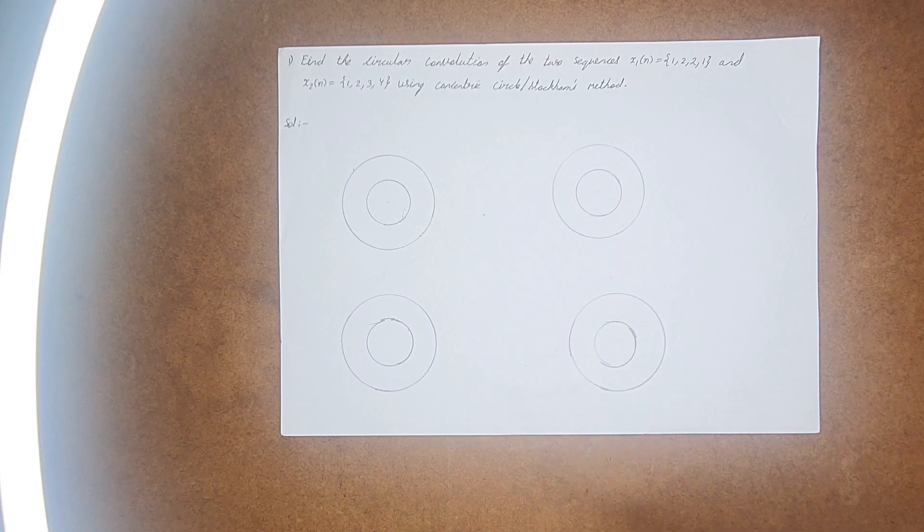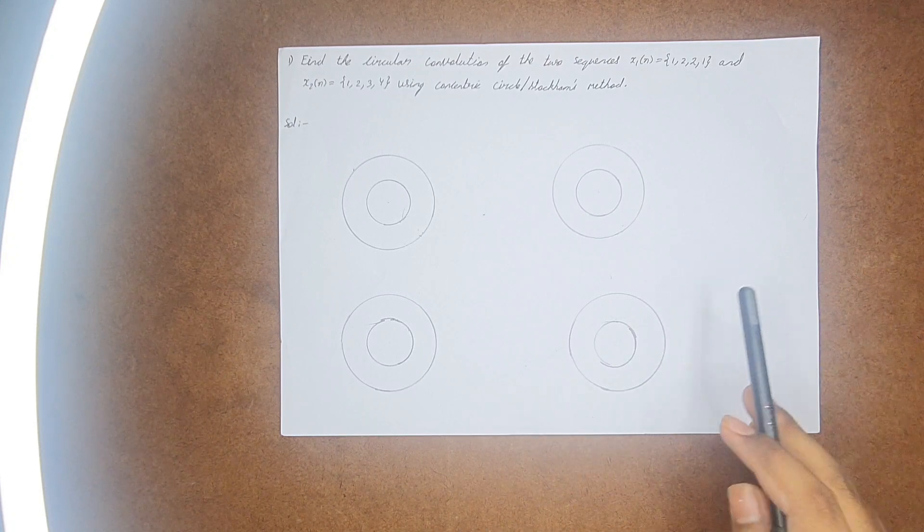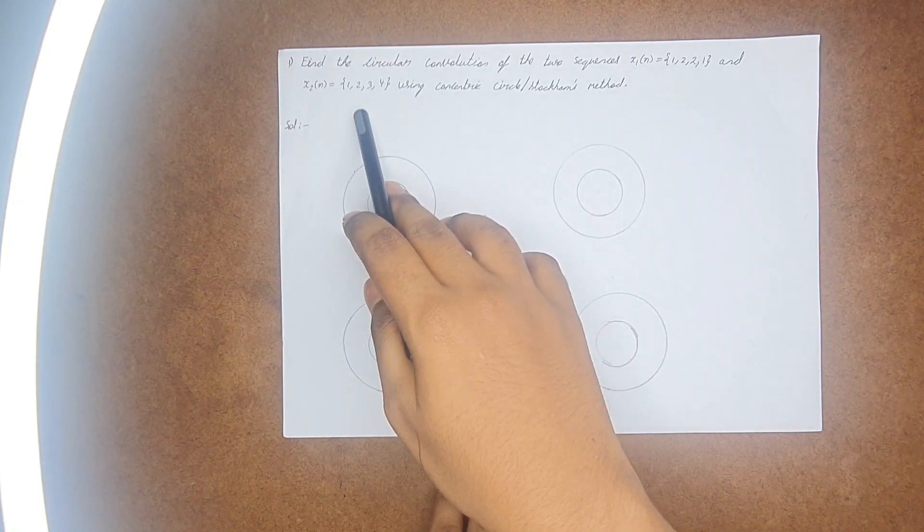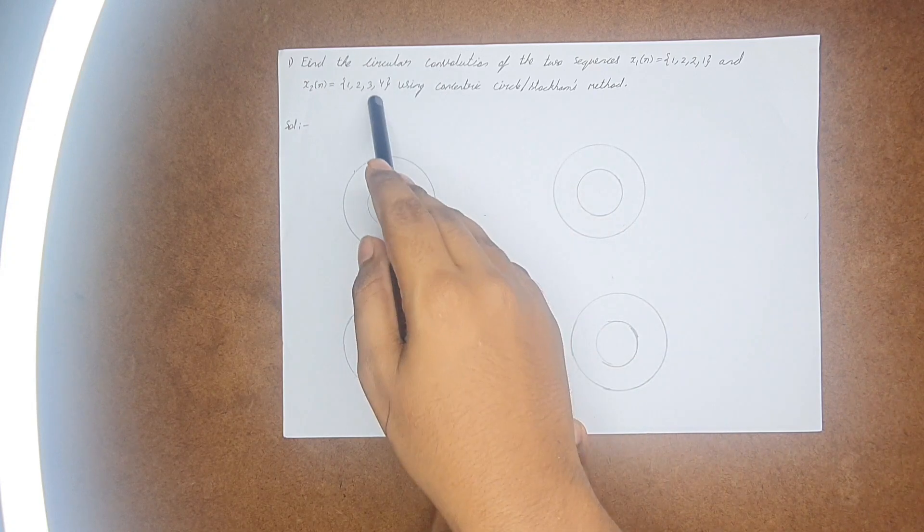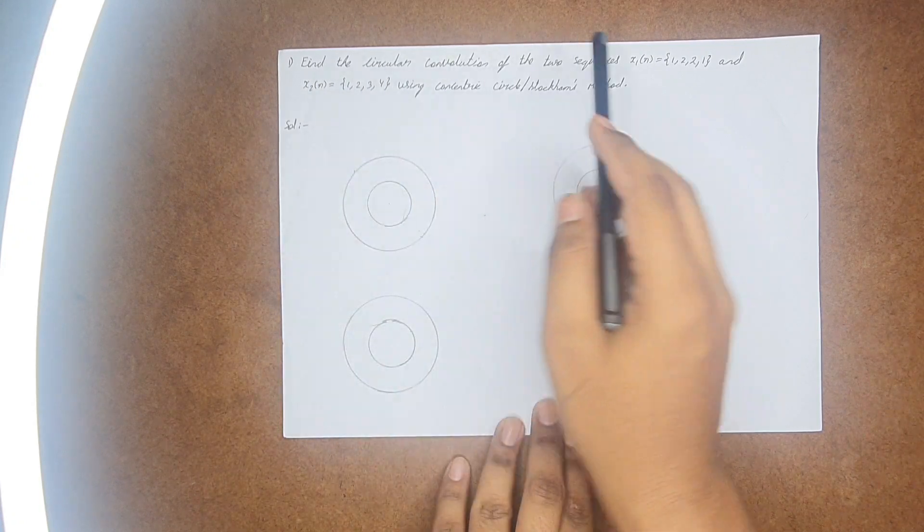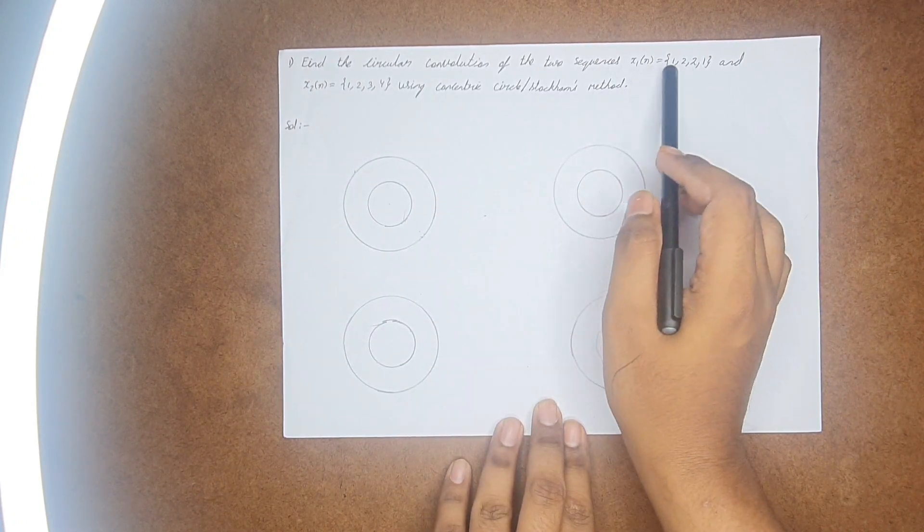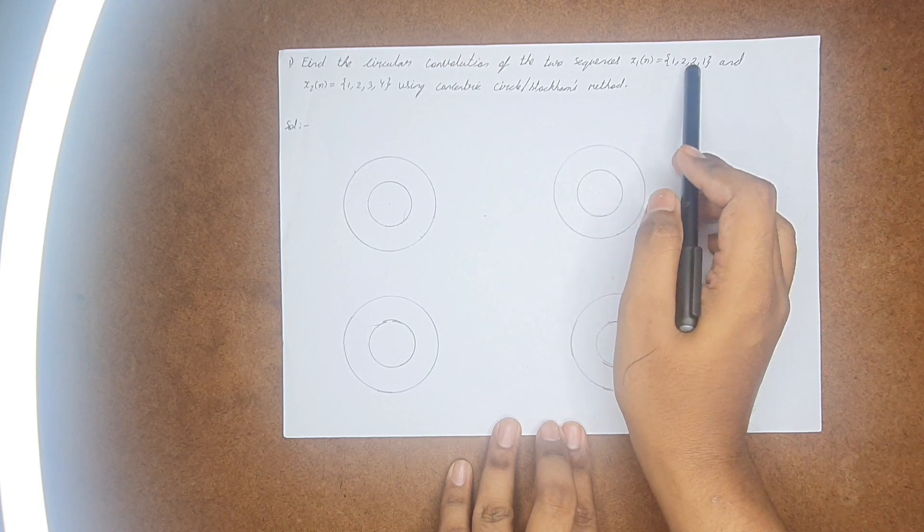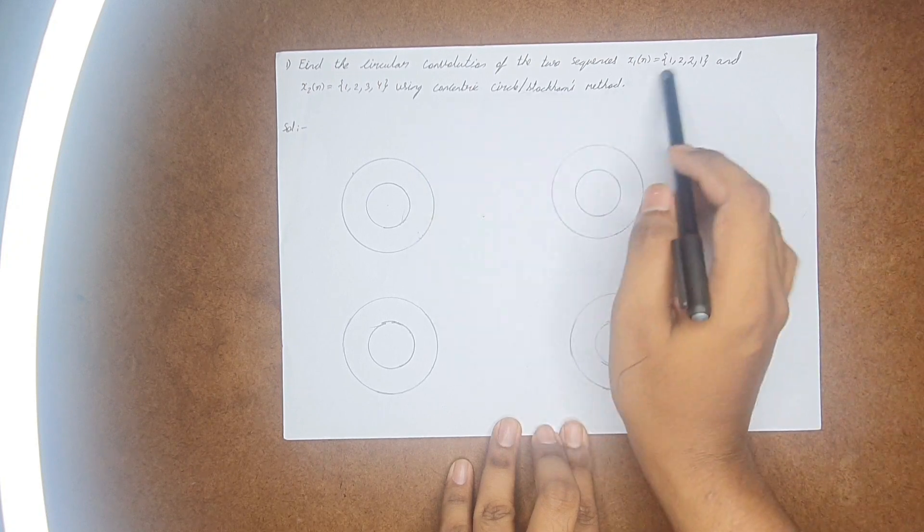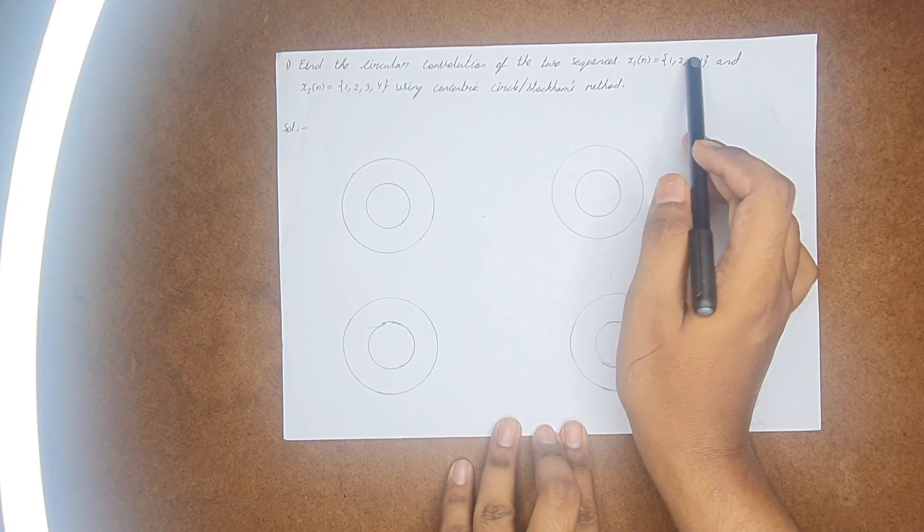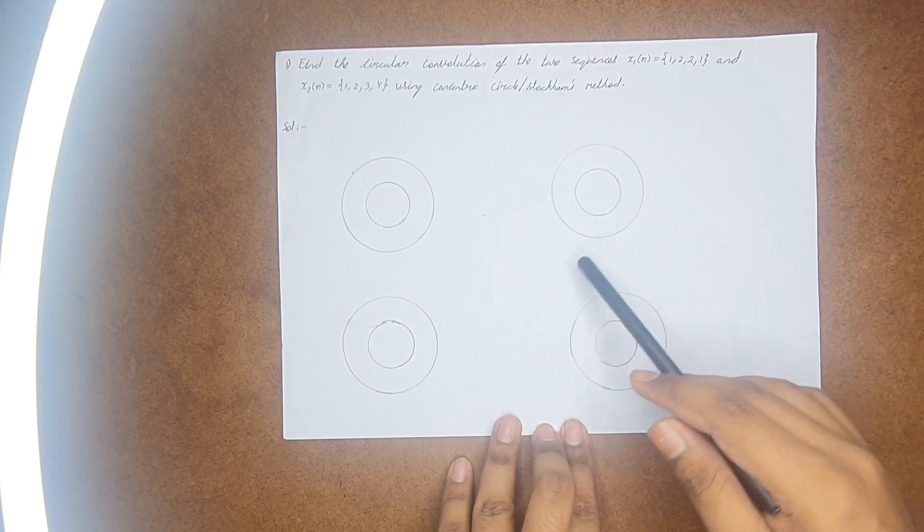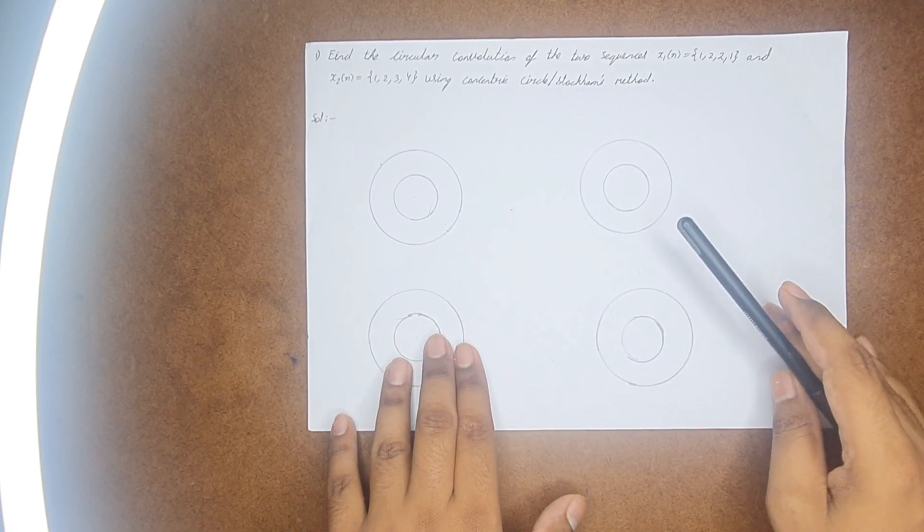In order to find the circular convolution between two different signals, there are different methods available out of which one is the circular concentric circle method or the Stock-Hammons method. To remember, whenever we do the circular convolution of any two signals, always you need to make sure both the signals are of equal length. If one signal has three values and another has four values, then you should add a zero at the last digit so that they both will have the same value.